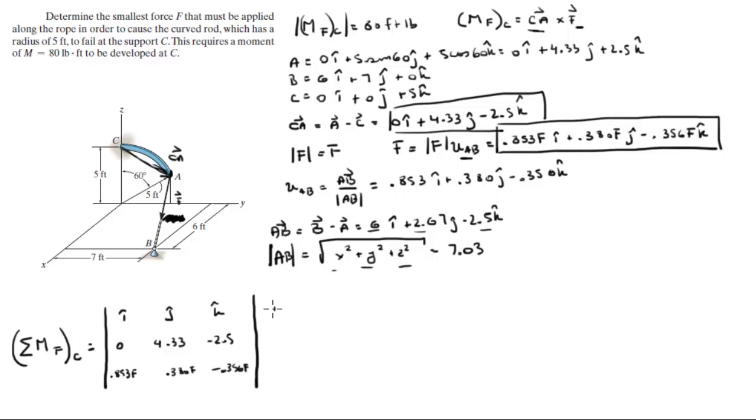So what you do is you redraw your first and second column: I, J, 0, 4.33, 0.853 F, 0.380 F. You do your positive diagonals, positive, positive, positive. So I times 4.33 times negative 0.356 is negative 1.54 F in the i. J times negative 2.5 times 0.853 is negative 2.13 F in the j. K times 0 times 0.380 F is 0 on the k.